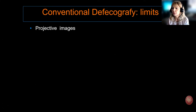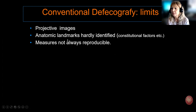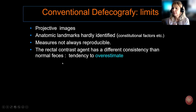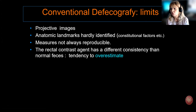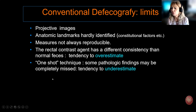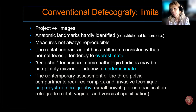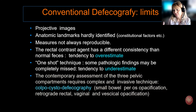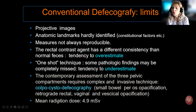On the other hand, there are several disadvantages. First, it provides just two-dimensional imaging, and anatomic landmarks are very hard to identify on radiological images, so measurements are not always reproducible. Furthermore, the barium paste may produce overestimation of invagination, since it has a different consistency than normal feces. It is also a one-shot technique, so some pathologic findings may be completely underestimated or missed. The complete colpocystodefecography technique is quite invasive, with considerable patient discomfort and a relevant radiation dose.